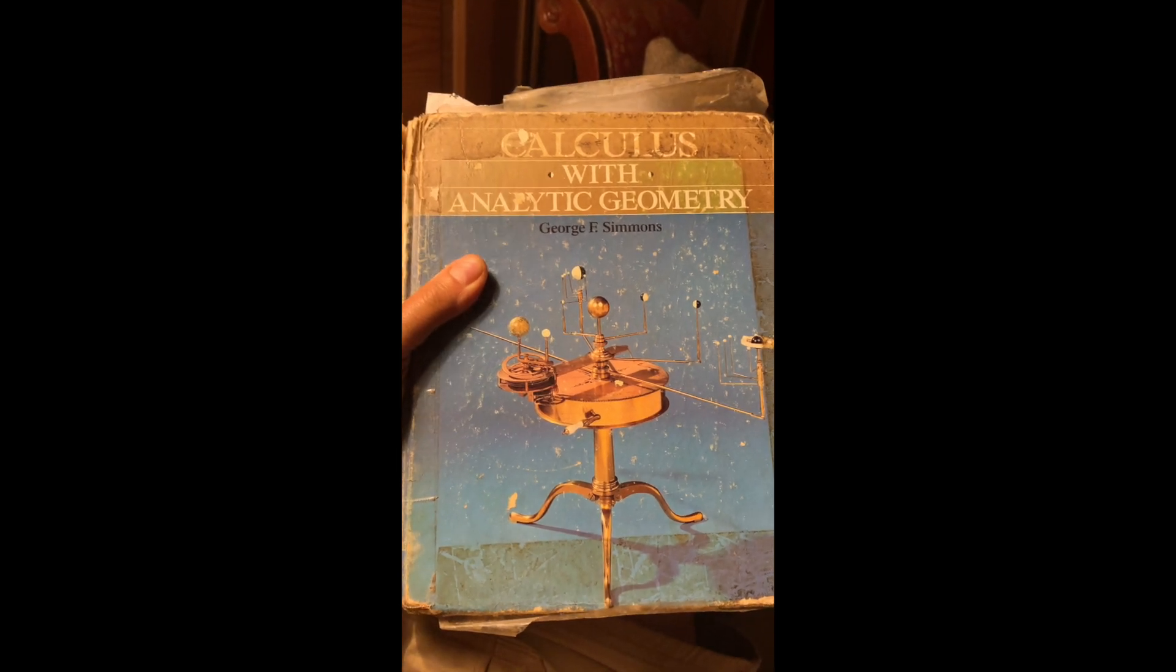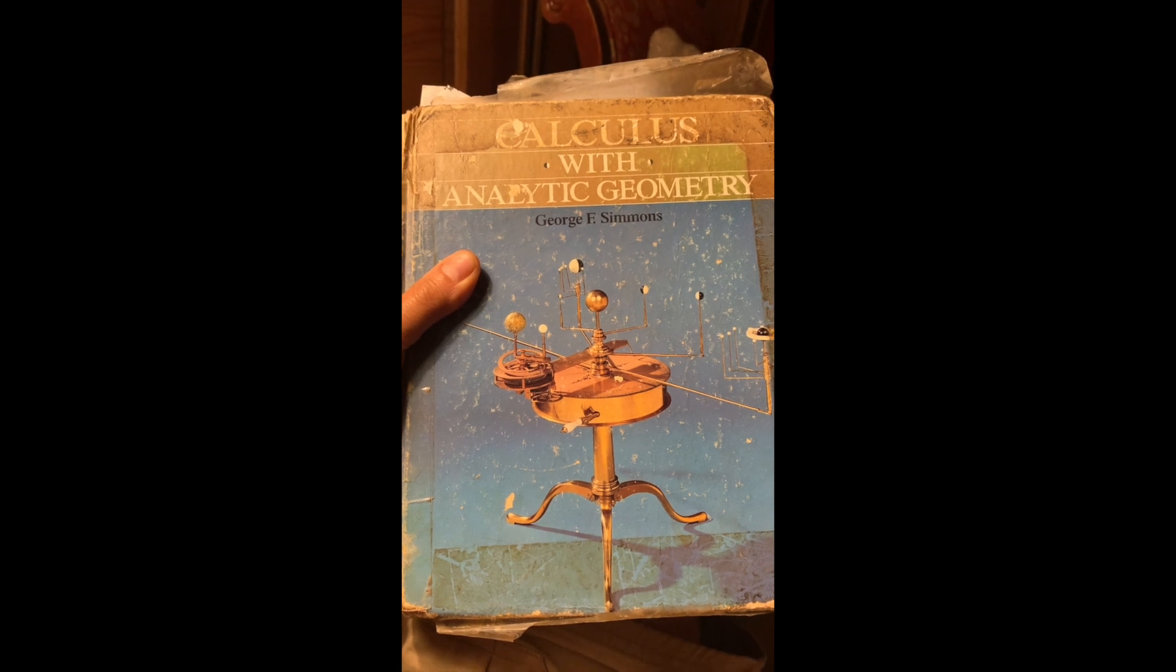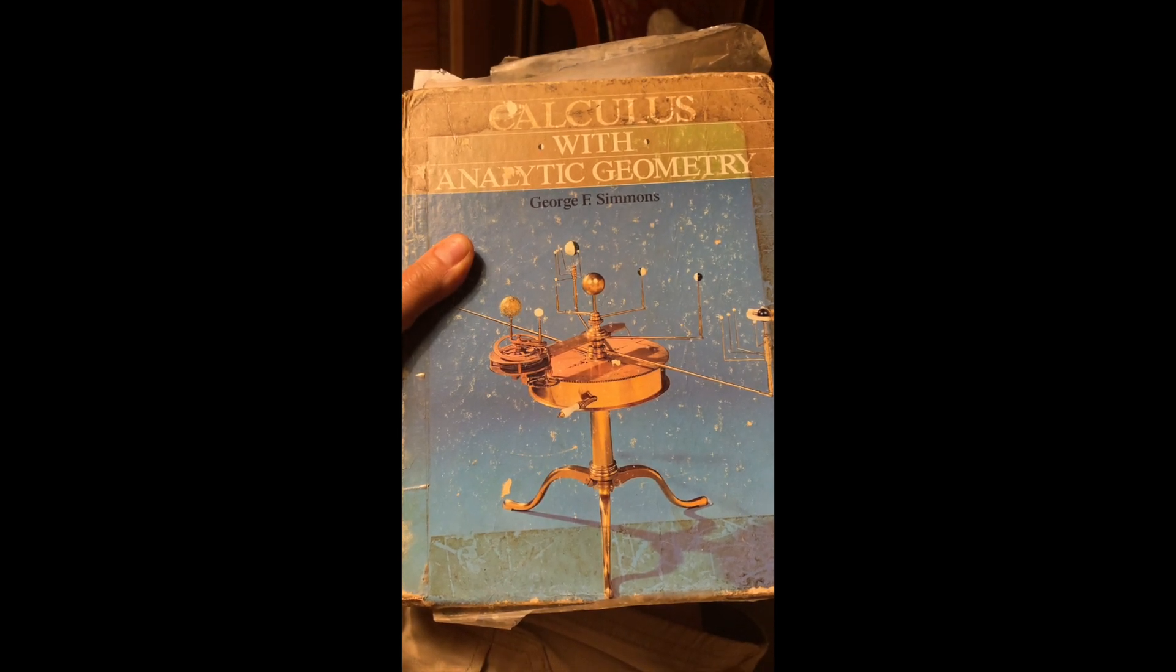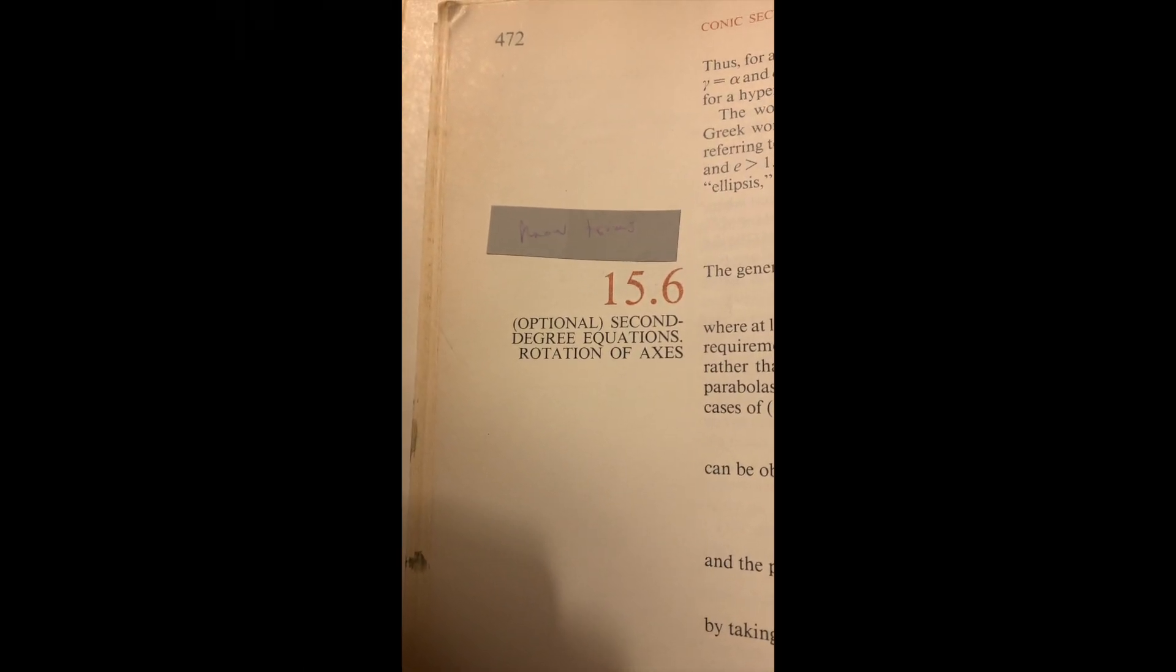So this is the world's best calculus textbook. This is my Bible, something I've been studying for the last 35 years, George Simmons Calculus with Analytic Geometry. I'm going to open it up to a particular section that I've been studying recently. This is a section called Second Degree Equations Rotations of Axes and it's got a pretty complicated title but the idea is really simple.